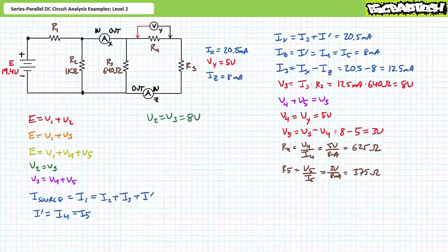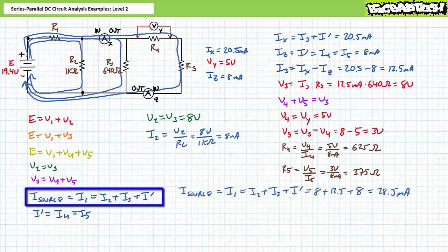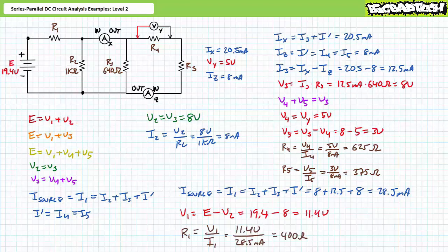We know everything about R3, R4, and R5, so let's move on to R2. Voltage across elements in parallel is the same, so V2 equals V3 and they both equal 8 volts. An application of Ohm's law solving for I2 demonstrates that I2 is 8 milliamps. Kirchhoff's current law demonstrates that source current equals I1, which equals I2 plus I3 plus I single prime. Substituting our calculated values demonstrates that source current and I1 are 28.5 milliamps. An algebraic manipulation of the Kirchhoff's voltage law equation solving for unknown voltage V1 demonstrates that V1 is the remaining 11.4 volts. Finally, Ohm's law solving for unknown resistor R1 demonstrates that R1 is 400 ohms.